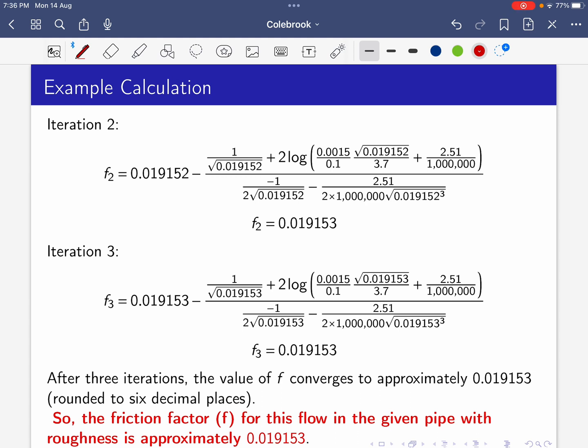After three iterations, the value of f converges to approximately 0.019153 rounded to six decimal places. The friction factor for this flow in the given pipe with roughness is approximately 0.019153. After getting the friction factor, we can easily calculate pressure drop, major loss, or whatever is needed. Now we understand how to calculate friction factor from Colebrook equation.